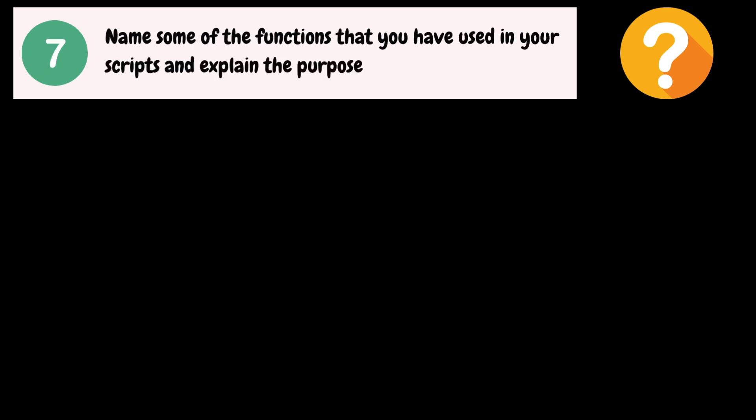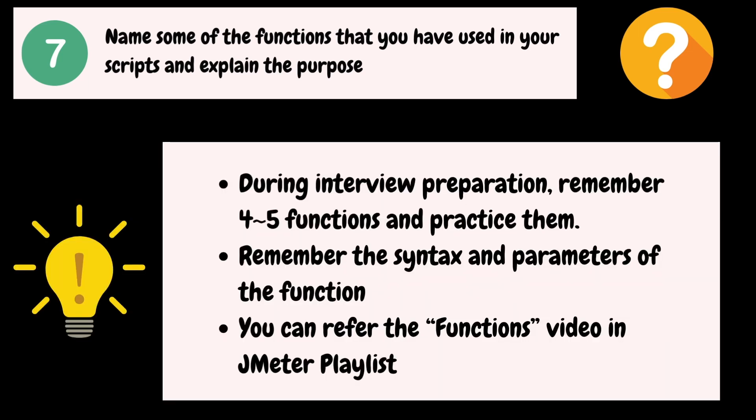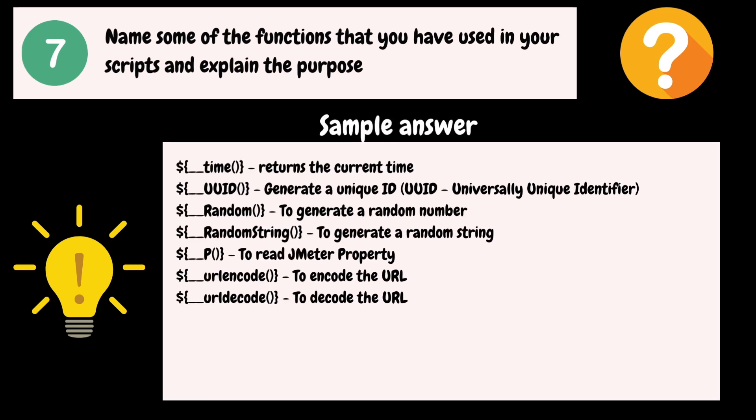Name some of the functions that you have used in your scripts and explain their purpose. While preparing for an interview, try to remember at least four to five JMeter built-in functions and practice them with some examples so that you will remember the syntax and parameters. Here are some generally used functions when testing web applications: time() to return the current time, UUID to generate a unique universally unique identifier, random() and randomString() to generate random numbers or strings, P() to read JMeter properties, and URL encode and decode to encode or decode URLs.